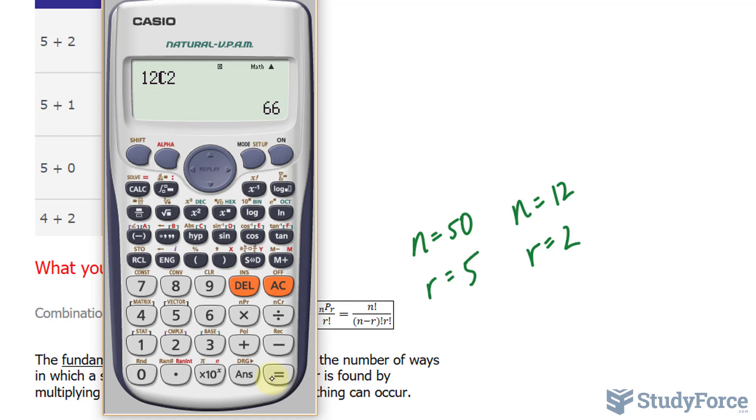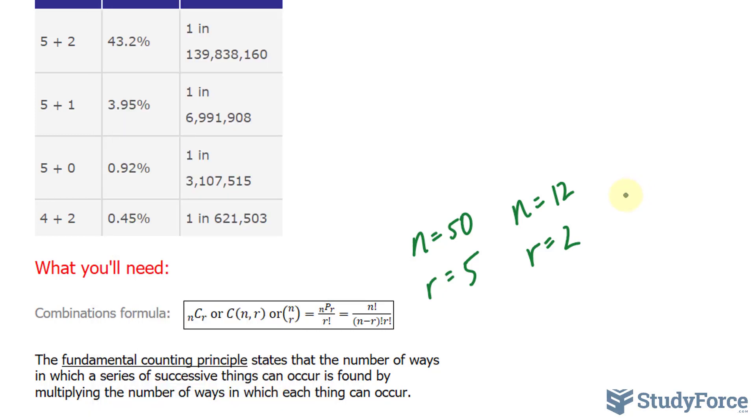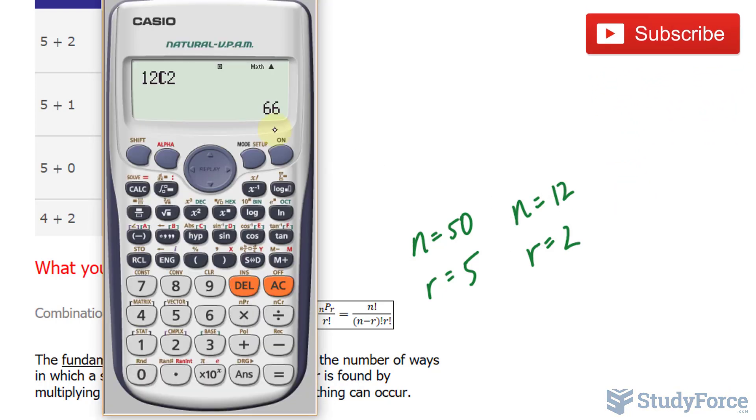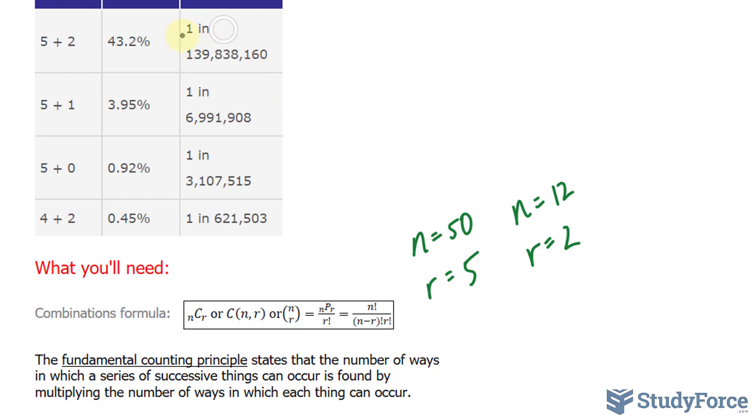So what do we do with these two probabilities? To combine these probabilities, we use the fundamental counting principle, which tells us that the number of ways in which a series of successive things can occur is found by multiplying the number of ways in which each thing can occur. If this one occurs in 66 ways, we will multiply this by our previous calculation. So let's retype it: 50 choose 5, and we get 139,838,160, which is exactly what was reported on their website.